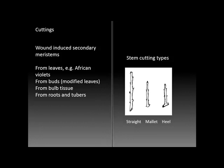From stem cuttings there are a couple of different types. A straight cut is made right through the stem. A mallet cut includes some tissue from the material above the twig that was taken, made across the branch from which the twig is harvested. All of these methods and techniques require formation of adventitious tissues to complete the development of a new plant.